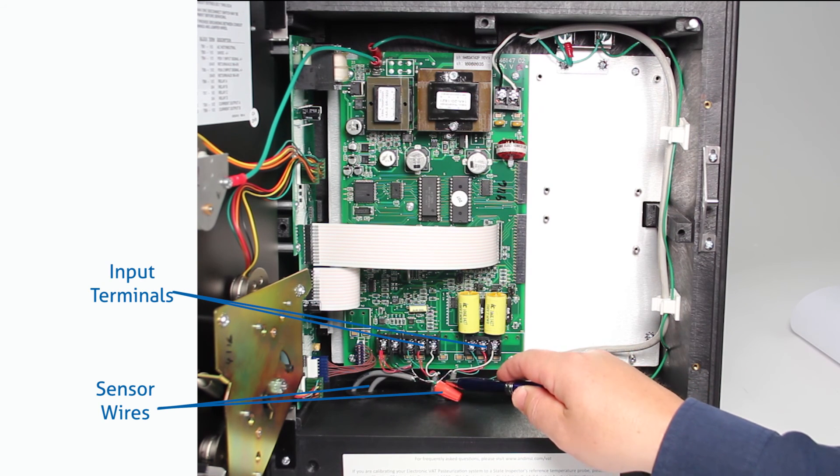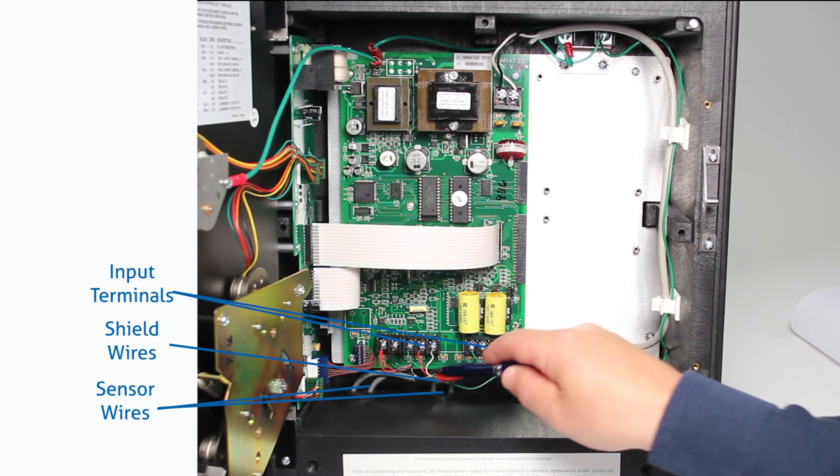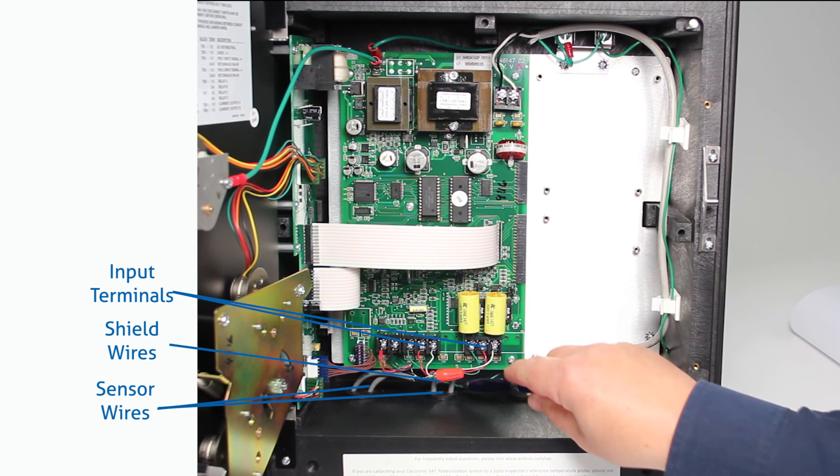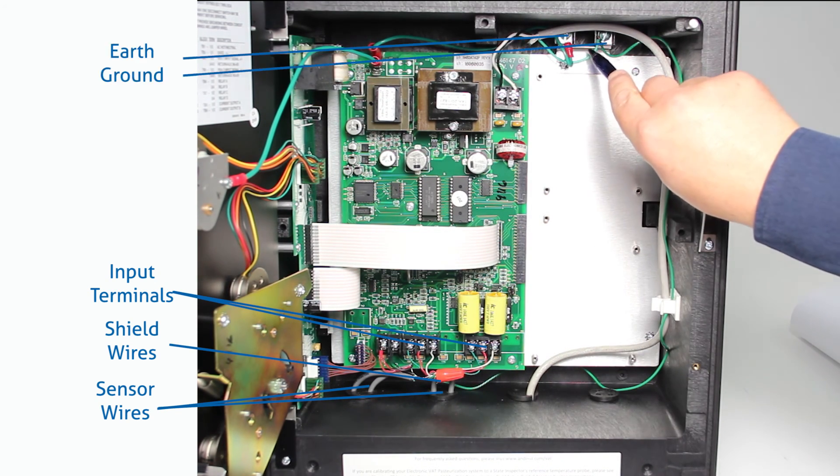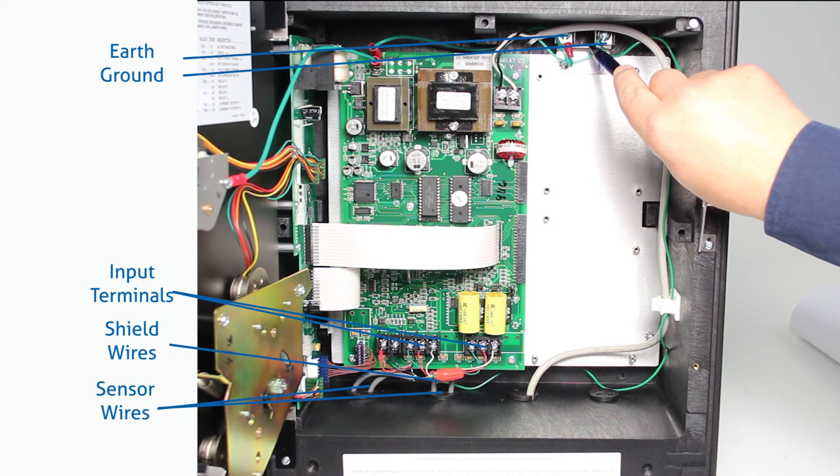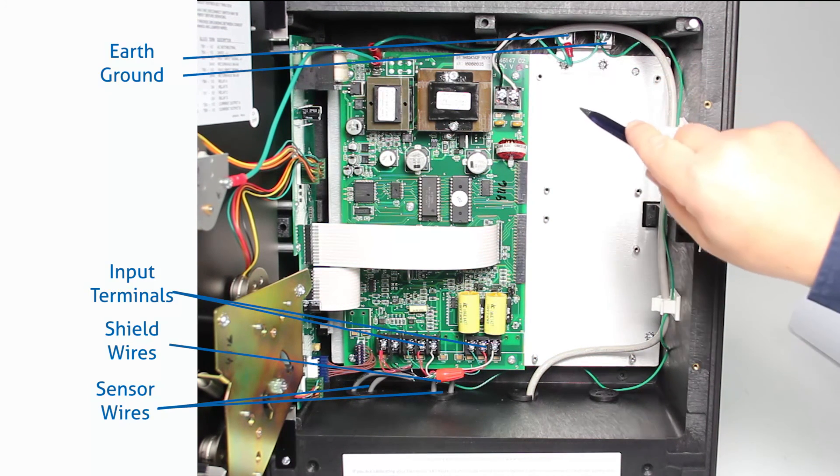The shield wires from the sensors, all the shield wires from each cable are connected together with a wire nut and they are connected to a separate wire which is going to come up here and be connected to the earth ground terminal on the back plane of the recorder with these large screws up in the top of the case.